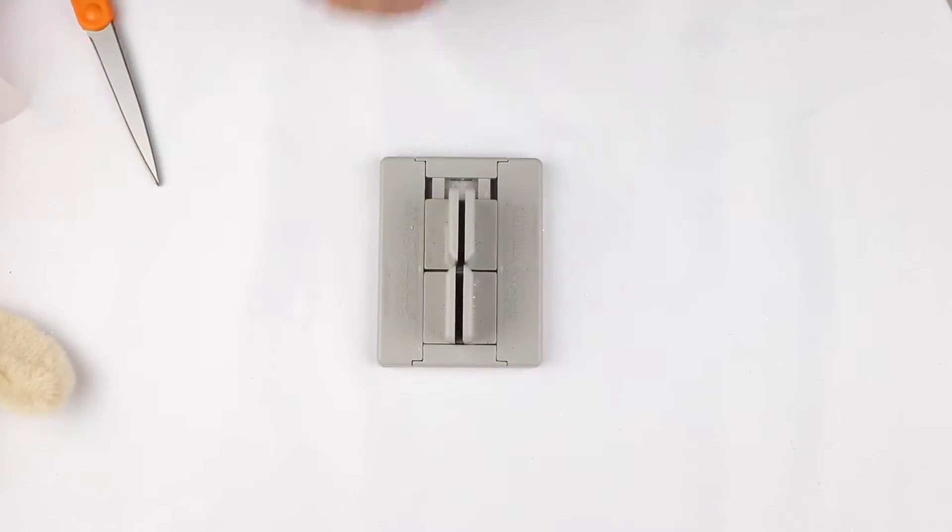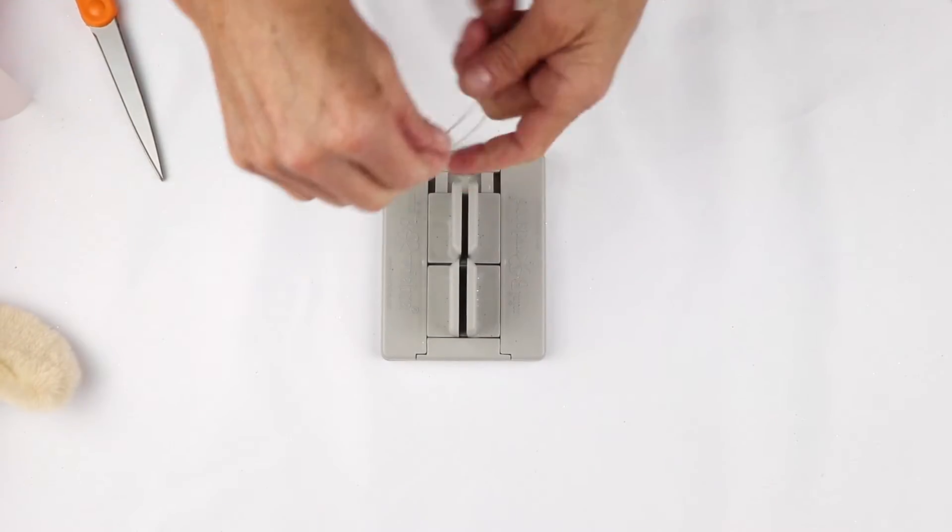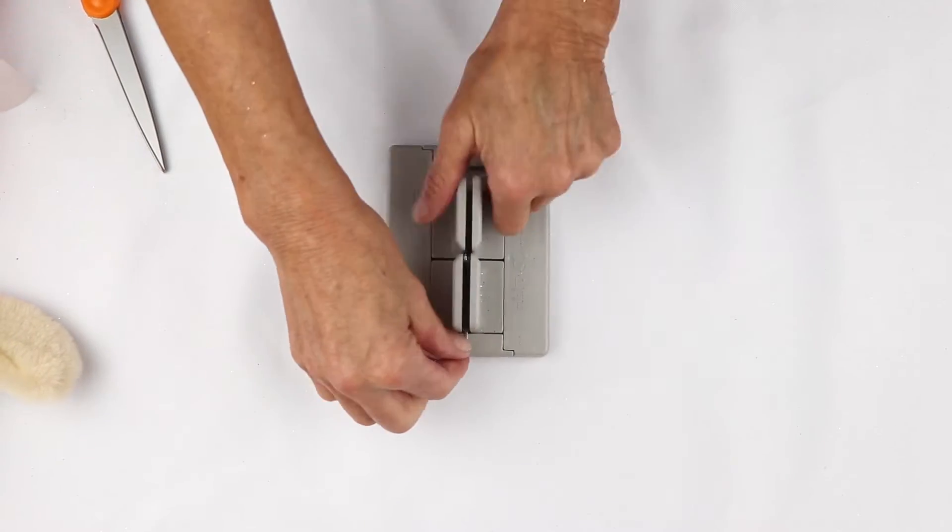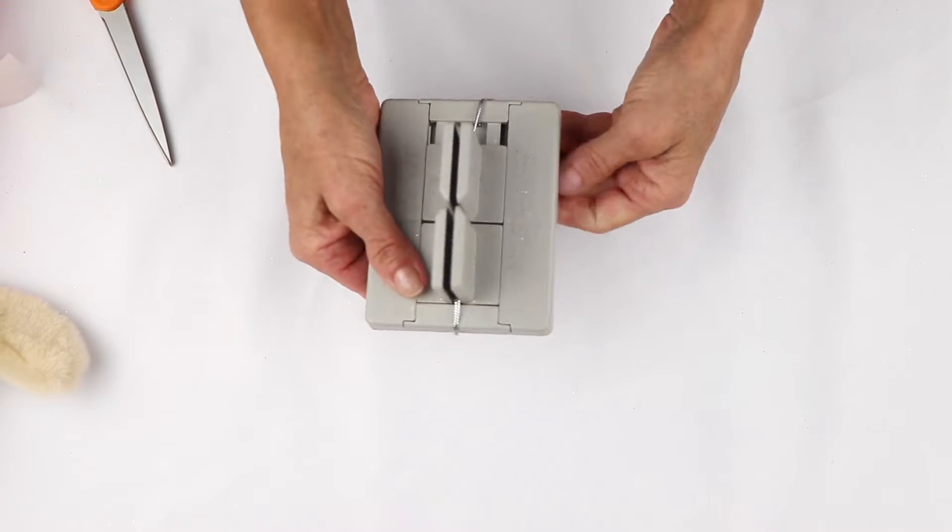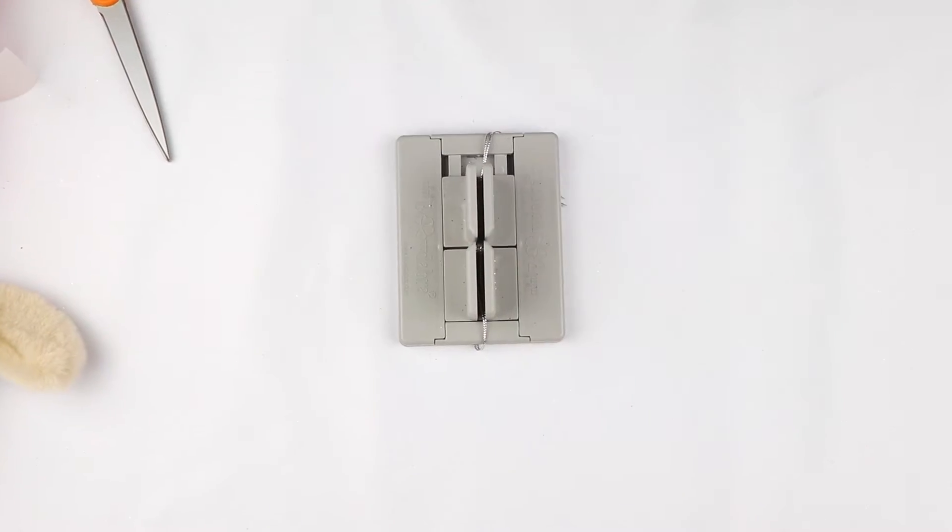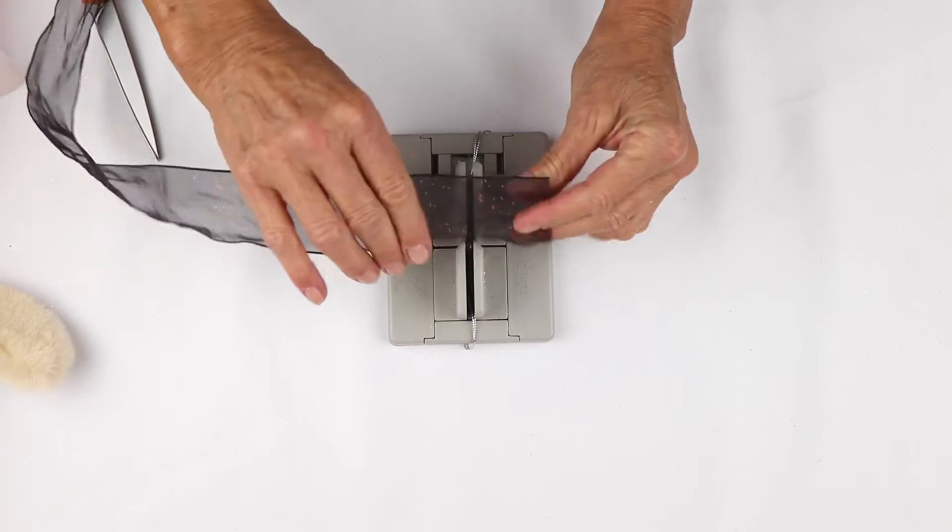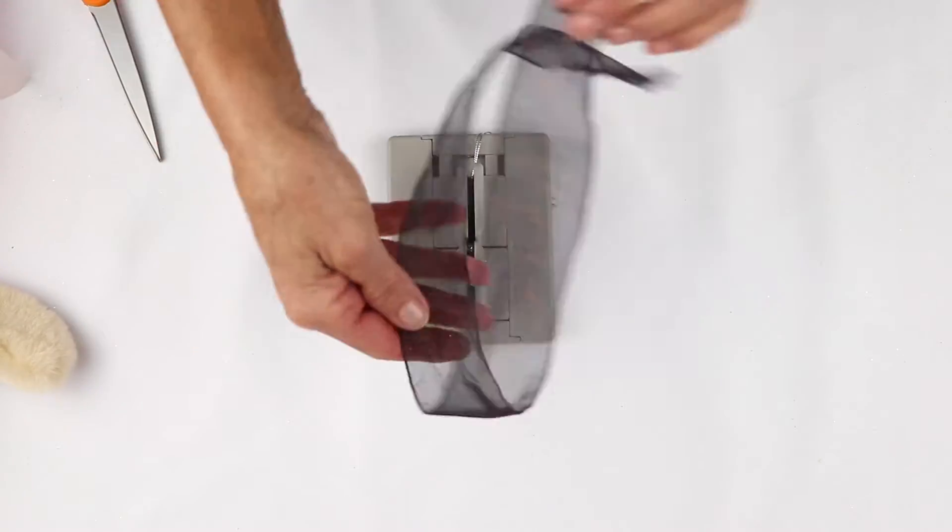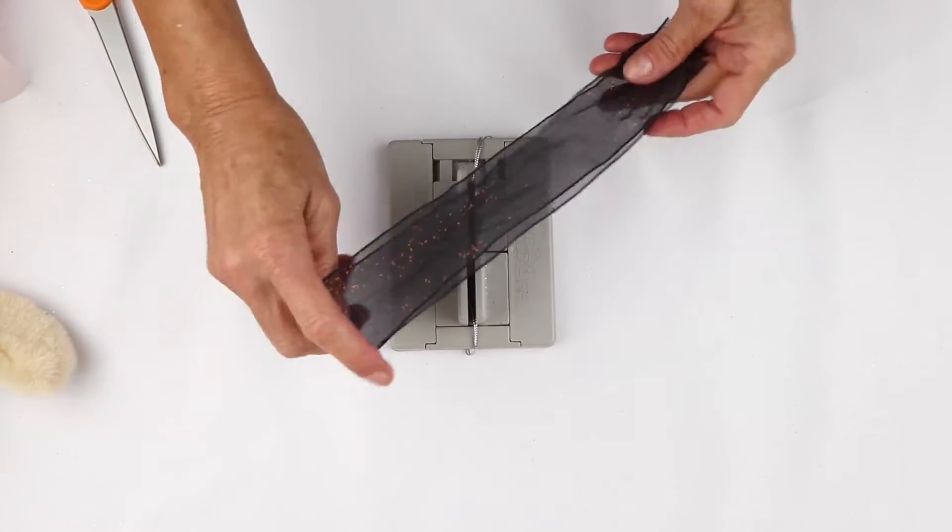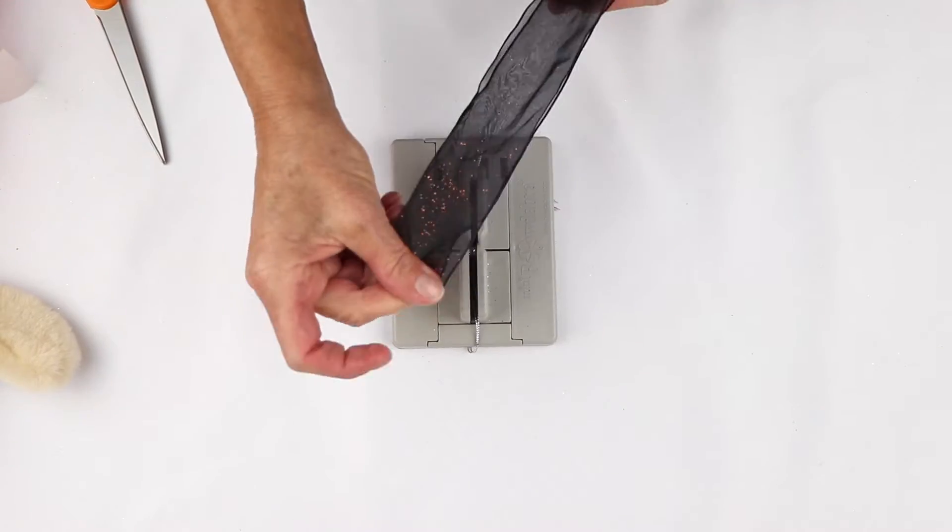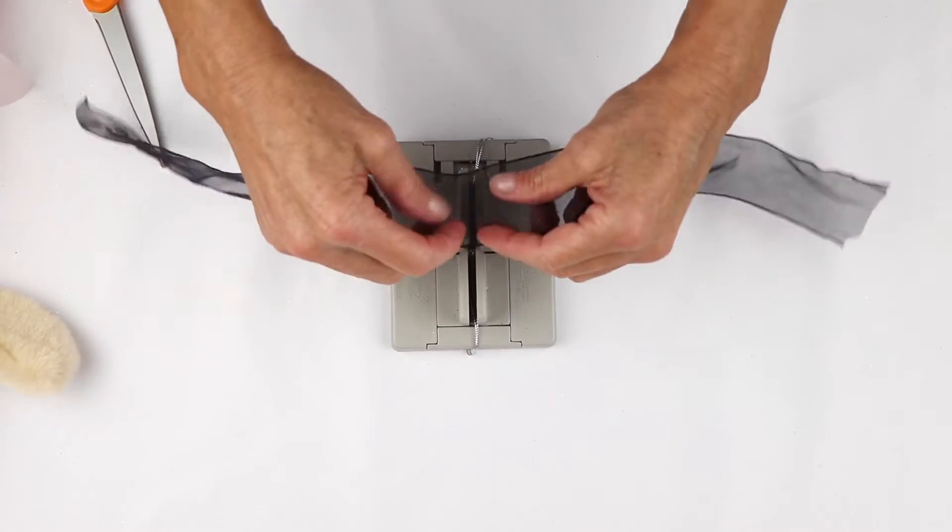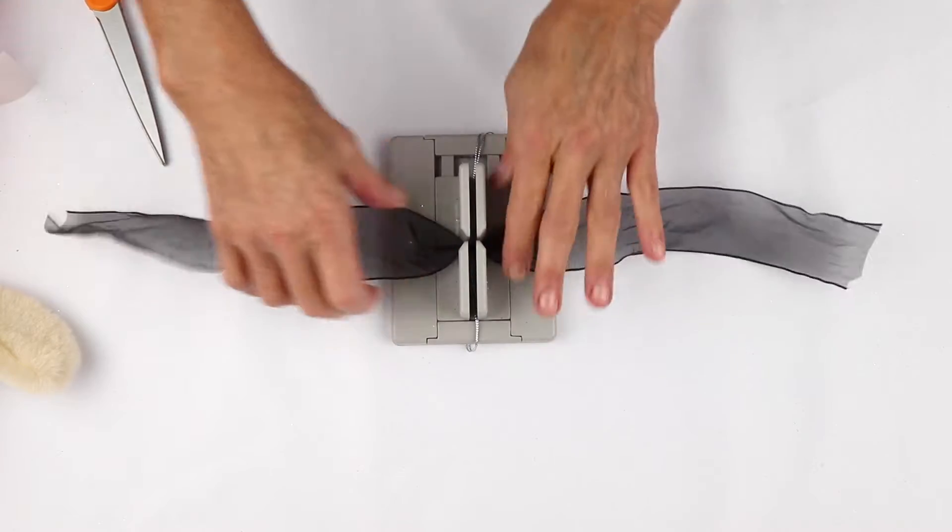So now I'm going to take my mini Bowdabra. And I have my Bowdabra bow wire already cut and folded in half. And I'm just going to lay it into my mini Bowdabra and tuck the ends underneath. Then I'm going to take this glittered sheer ribbon and fold it in half and find the center. And I'm going to put it wrong side down into my mini Bowdabra.